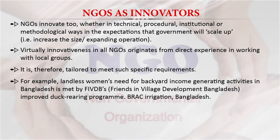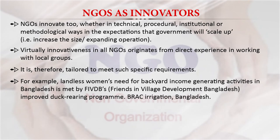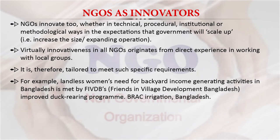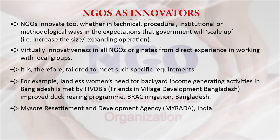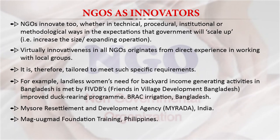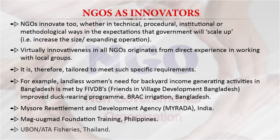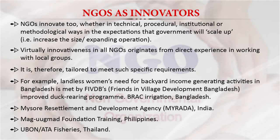Coming to NGOs as innovators — NGOs innovate in technical, procedural, institutional, or methodological ways, with the expectation that the government will scale up their work. Innovativeness in NGOs originates from direct experience working with local groups, tailored to meet specific requirements. For example, the landless women's need for backyard income-generating activities has been met by Friends of Village Development in Bangladesh through improved duck rearing programs. BRAC is helping with irrigation in Bangladesh, MYRADA is working in India, Mag-uugmad Foundation is in the Philippines, and Ubanata Fisheries is in Thailand — all acting as innovators.